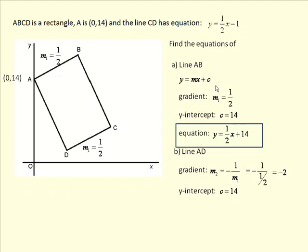The y-intercept for the line AD is the same as before, 14. But now we have an equation, y equals minus 2x plus 14, and that's the answer to that part of the question.